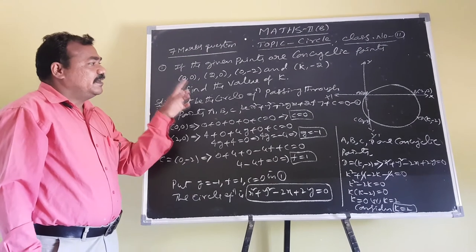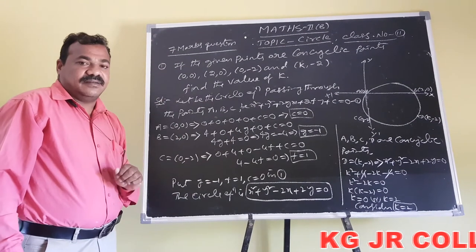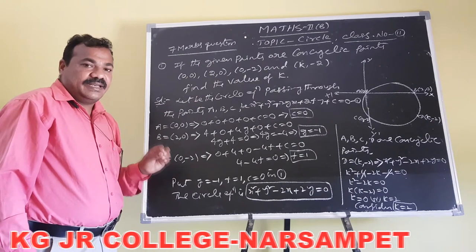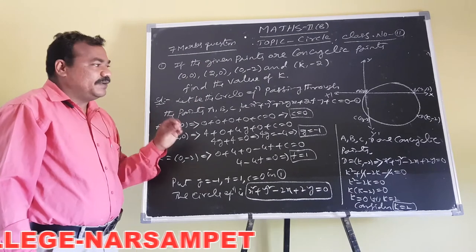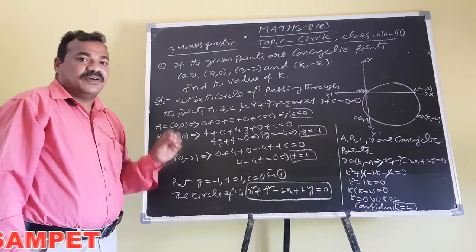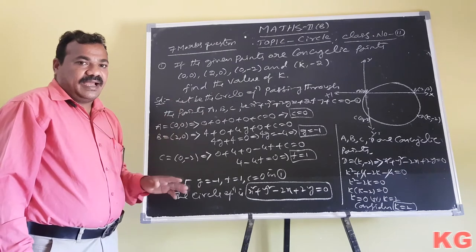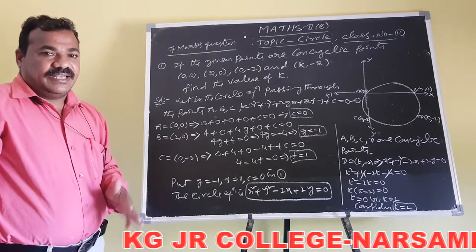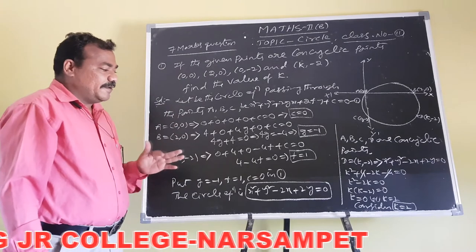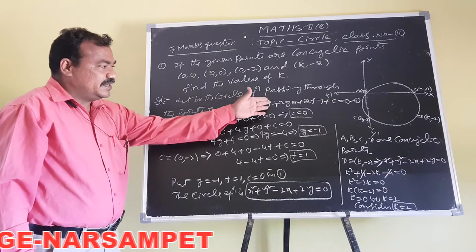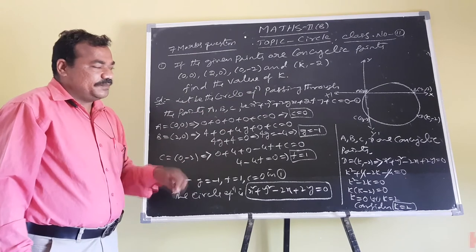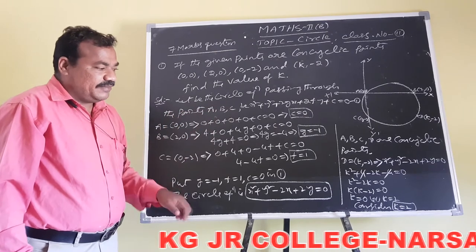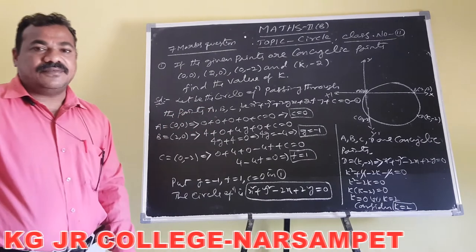To summarize: given all four points are cyclic, to find k, first find the circle equation passing through the first three points. Obtain values of g, f, c, then substitute the coordinates of the fourth point into the circle equation to get the value of k.